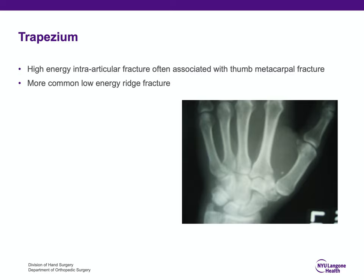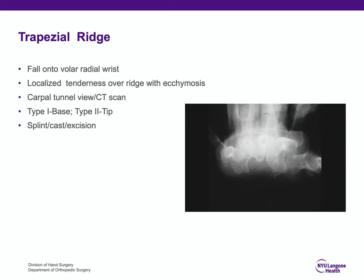The trapezium fracture is oftentimes a high-energy intra-articular fracture often associated with a thumb metacarpal fracture — the trapezial articular surface or body fracture. The more common trapezial fracture is the low-energy trapezial ridge fracture. When patients have trapezial ridge fractures, they oftentimes complain of pain at the base of the thumb after a fall onto the volar radial wrist. On physical examination, there'll be localized tenderness over the trapezial ridge with ecchymosis, not over the scaphoid.